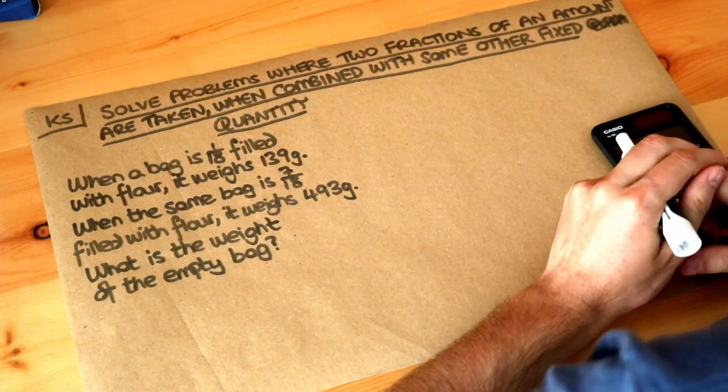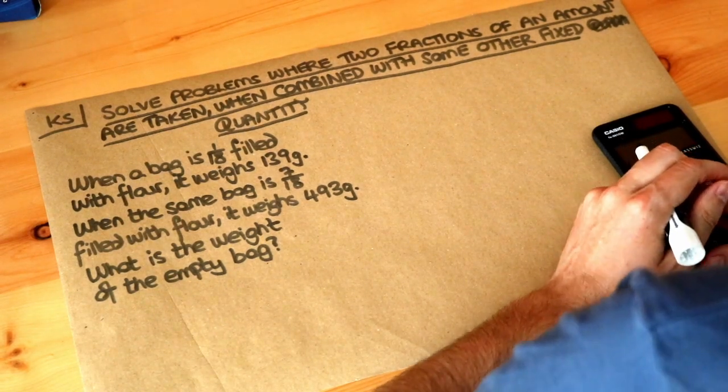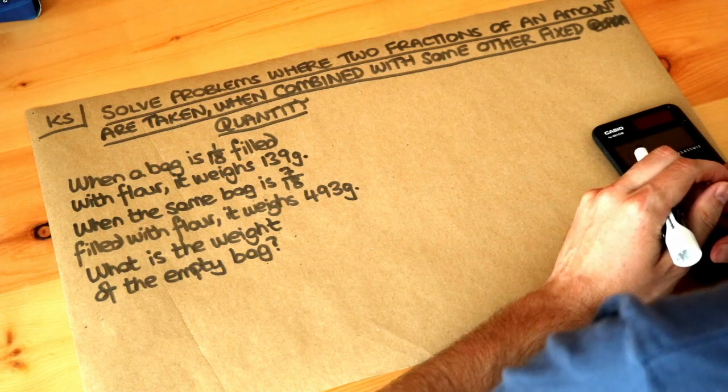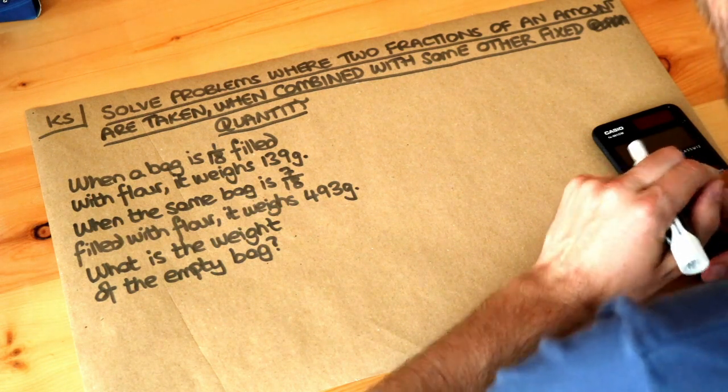Hello and welcome to this Dr Ross video on solving problems where two fractions of an amount are taken when combined with some other fixed quantity. Let's read the question.